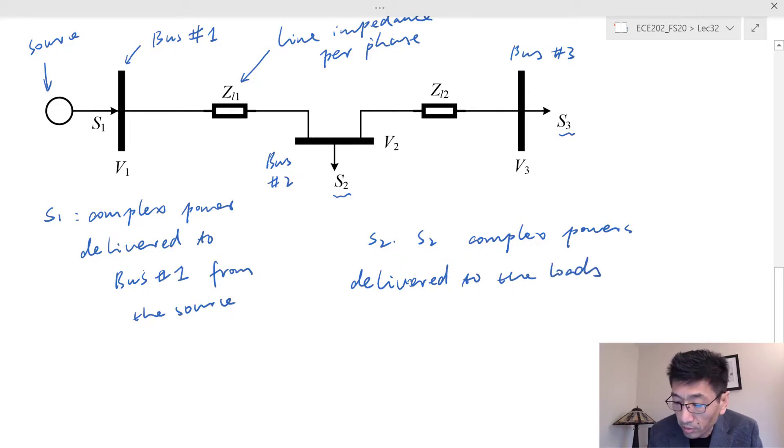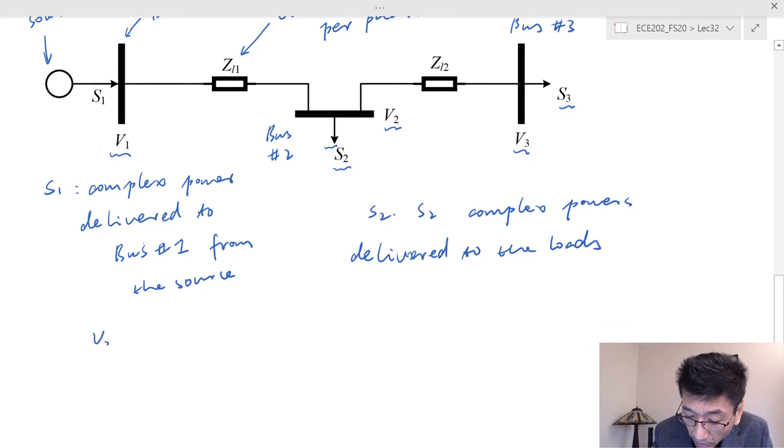Also, this arrow points away from the bus, that means you draw the power from it, which is very informative. The other thing is you also label the voltage, the voltage at each bus. Now these voltages are not phasors—these voltages are just the line-to-line voltage magnitude.